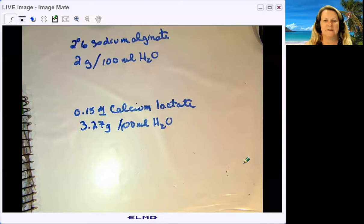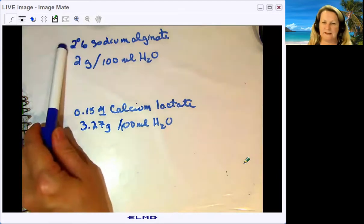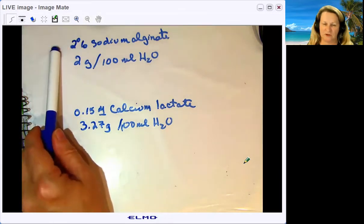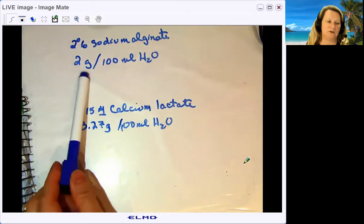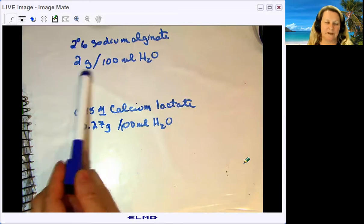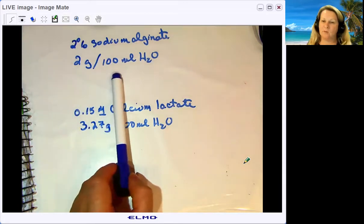I'm going to start sharing my screen and show you what you need for this lab. We're going to make two main solutions. You need a 2% sodium alginate solution—that's a weight to volume ratio, so 2 grams of sodium alginate per 100 mL of water.